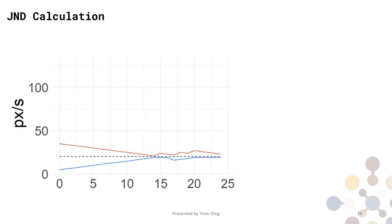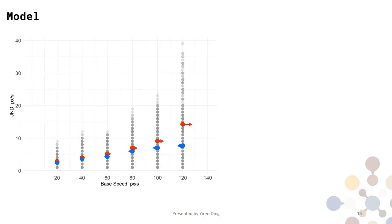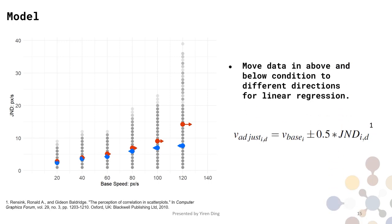To calculate the JND value, following the previous methodology, at each speed level and each direction, we calculate the average of the second half of compare values as JND value. Because we have two directions at each speed level, there are two sets of data for each speed. To fit the linear regression model, we move the data in above and below direction to opposite directions by this equation. As you can see, for all data in above direction, they will be moved towards larger side at x-axis, and for below direction, they will be moved towards smaller side.